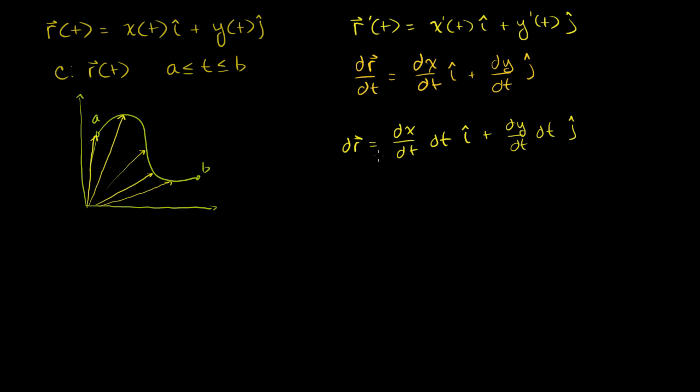Or we could rewrite this, and I'm just rewriting it in all of the different ways that one can rewrite it. You could also write this as dr equals x prime of t dt times the unit vector i. Sorry, this was x prime of t dt, right? This is x prime of t right there, times the unit vector i plus y prime of t times dt times the unit vector j.